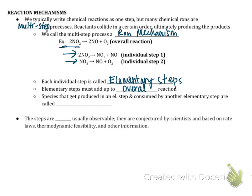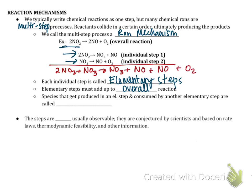Each of the elementary steps, when put together, must add up to the overall reaction. If I take these two reactions and add them together, I get two NO2 plus NO3 yielding NO3 plus NO plus another NO plus O2. The NO3 cancels from both reactants and products, and I'm left with two NO2 yielding two NO plus O2 — that is the overall reaction. Our elementary steps must actually add up to the overall reaction, otherwise the mechanism is not valid.